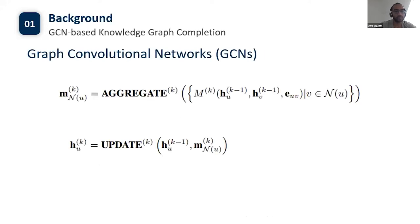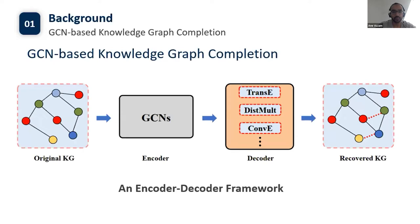Graph convolutional networks are a class of powerful models to capture graph structures. Usually, GCNs follow an iterative message passing framework, which consists of an aggregate and an update step. In each iteration, the representation of each node is updated using information aggregated from the node's neighborhood. Note that unlike classical GCNs on simple graphs, GCNs used for knowledge graphs must take relations into account. GCN-based KGC models usually use an encoder-decoder framework, where GCNs perform as the encoder and KGE models perform as the decoder.